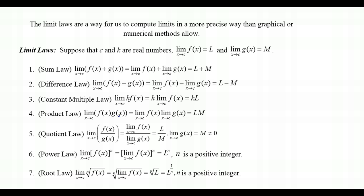The Product Law states that the limit of a product of two functions equals the product of their individual limits — L times M. The Quotient Law lets us take the limit of the numerator and the limit of the denominator separately to get L over M, with the requirement that M cannot equal zero.